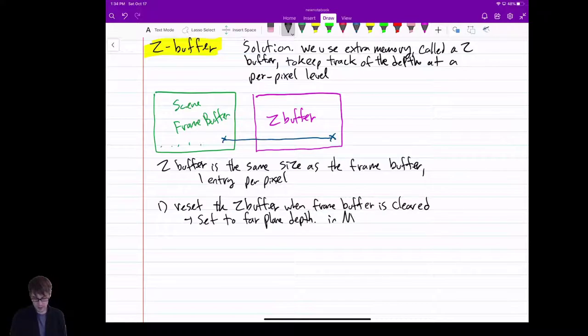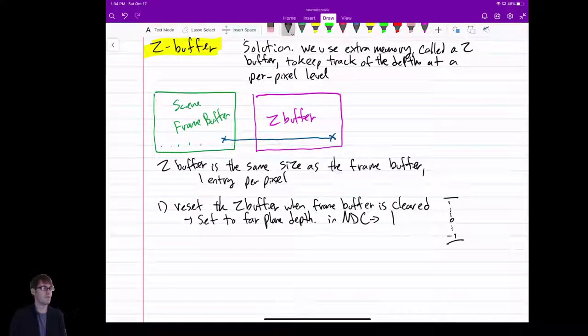Set it to the far plane depth. If we're using normalized device coordinates, that's one, right? One's the furthest away, negative one is the closest away, remember? That's our far plane, that's our near plane. Just remember that. Great. So we reset the buffer, they're all set to far, or one.